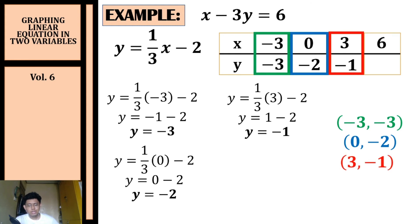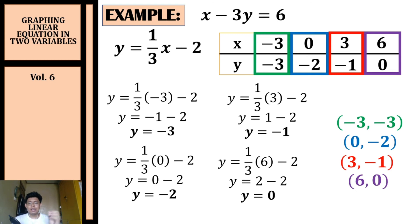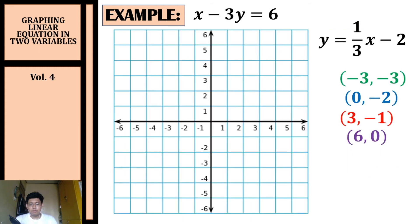Substituting x equals six: y equals one-third times six minus two, which gives two minus two, so y equals zero — our fourth coordinate is (6, 0). Now that we have all coordinates, it's time to plot them in the rectangular coordinate system.